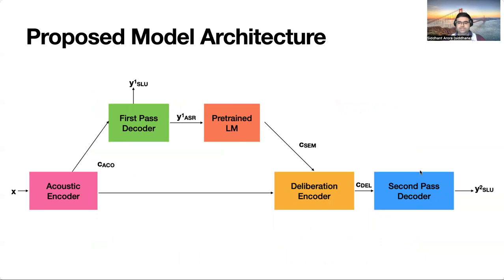The architecture of our two-pass SLU system is shown in the figure. The input is an audio feature sequence. The input speech signal is passed through an acoustic encoder to generate the acoustic embedding. The first-pass decoder then inputs the acoustic embedding and generates both the intent and the ASR transcript. The ASR transcript is tokenized and passed through a pre-trained language model to generate semantic representations. These are then passed through a linear layer to produce representations with the same hidden dimension as the acoustic embedding. The acoustic and semantic embeddings are concatenated and attended by a derivation encoder to produce the joint embedding. The second-pass decoder then inputs the joint embedding to generate the second-pass intent.